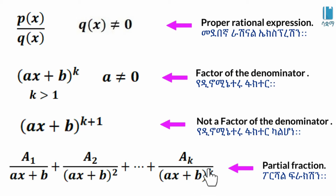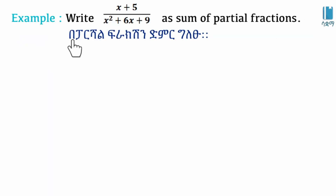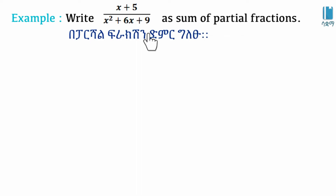This is why we have k introduced. In the first place, we set an expression x plus 5 over x squared plus 6x plus 9 to be partial fraction decomposed. Write the partial fraction decomposition of x plus 5 over x squared plus 6x plus 9.